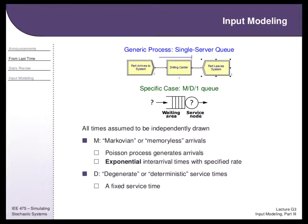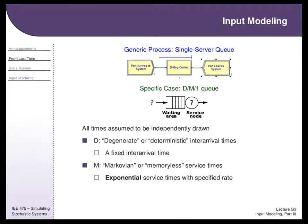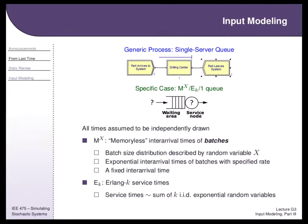Kendall's notation lets us summarize these two input models succinctly for a queuing node. But there are other things we could put in there — like D for degenerate or deterministic. We might model service as always taking exactly three minutes, never any variation — that's an M/D/1 node. Or flip it: arrivals always exactly three minutes apart but with variation in service — that's a D/M/1 queue. The picture always stays the same, but the distributions inside these nodes keep changing. That's input modeling — figuring out those distributions.